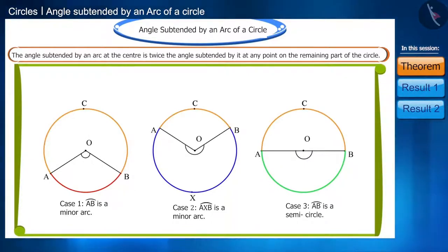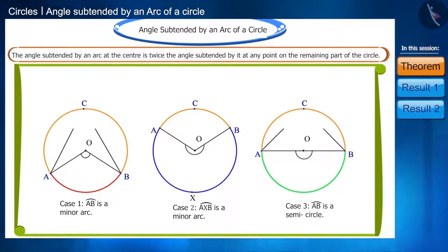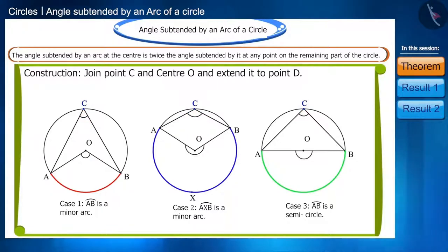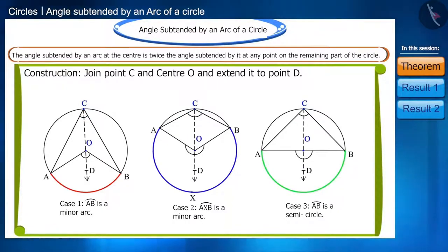Take a point C on the remaining part of the circle. Now connect both points A and B to the point C to get the angle subtended by arc AB at point C. Now let's connect point C and center O, and extend it to point D.